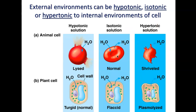An example of isotonic would be when you get an IV bag and it says 0.9% NaCl. Another example of a hypotonic situation would be if you got an IV that only had distilled water in it.